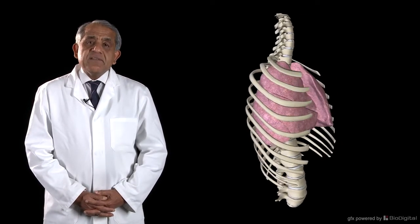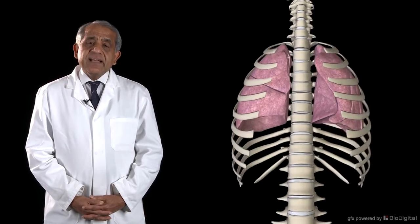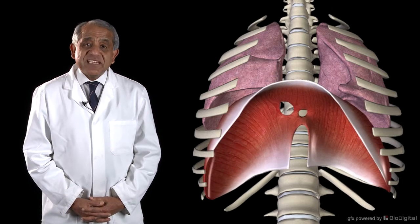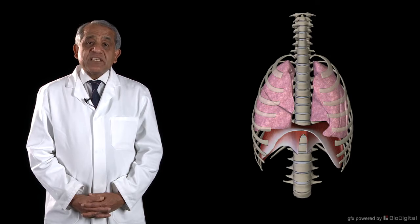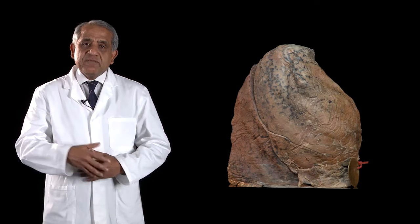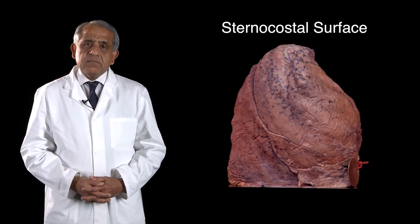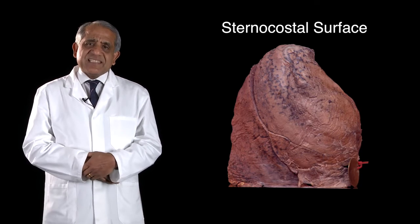Let's now consider the surfaces and the borders of the lung. The broad base is in fact a concave surface, and it's concave because it is indented from below by the corresponding dome of the diaphragm. Between the apex and the base of the lung, the lung displays two surfaces. An outer surface which is sort of convex uniformly, and that is referred to as the sternocostal surface because it's related to the inner aspect of the sternum and to the inner surfaces of the ribs of that side.